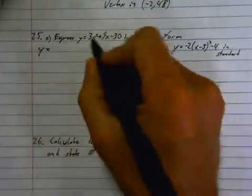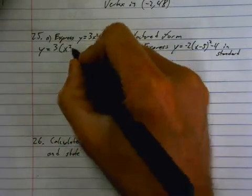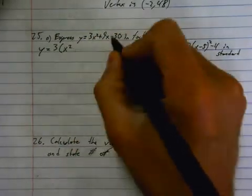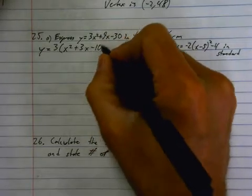So luckily this 3 comes out of here, so the 3 comes out of all of these things. That divided by 3 is x squared, that divided by 3 is 3x, and that divided by 3 is negative 10.